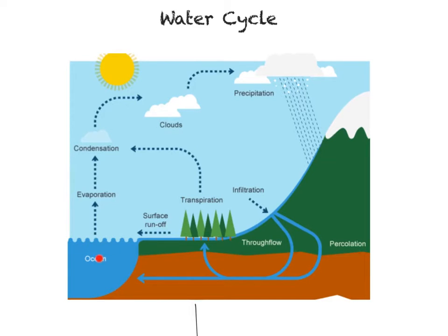The first stage is how the water gets from the ocean to precipitation. You may be aware of this process through studying the water cycle in other subjects and your key stage three geography. Basically the water evaporates, rises, cools and condenses to form clouds and turns into precipitation.